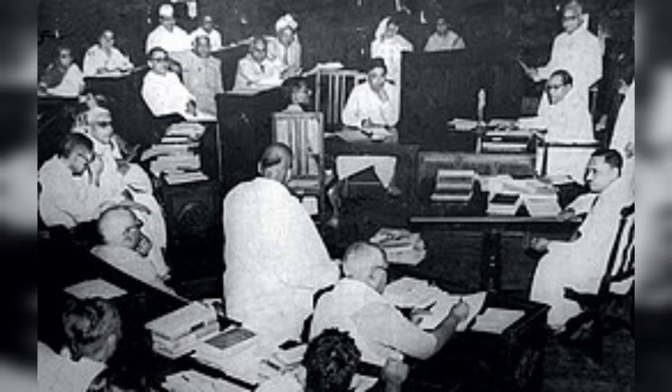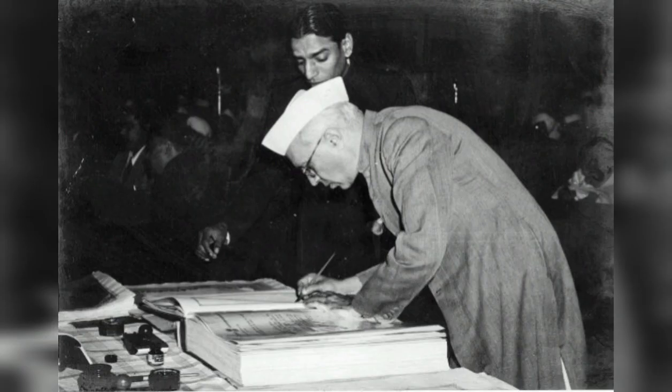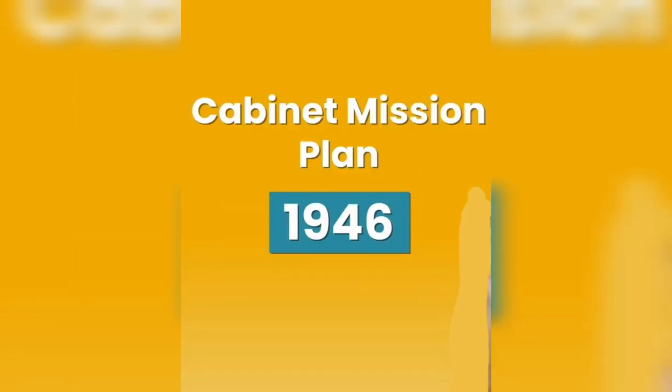A Constituent Assembly was required for making a Constitution. The very first vision of making a Constituent Assembly was given by M.N. Roy in 1934, but eventually under the Cabinet Mission Act of 1946, a Constituent Assembly was formed.